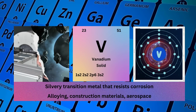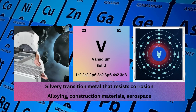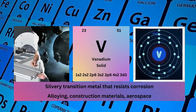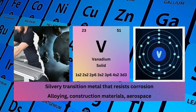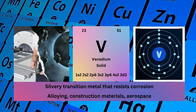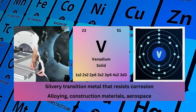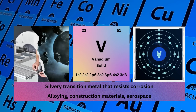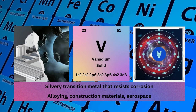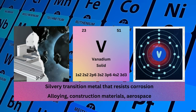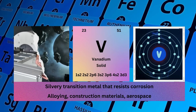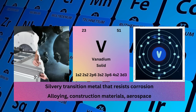Vanadium. Atomic No. 23. Mass No. 51. Symbol V. State Solid. Electronic Configuration 1S2 2S2 2P6 3S2 3P6 4S2 3D3. Physical Properties: Silvery Transition Metal that Resists Corrosion. Vanadium is used for alloying, construction materials, and aerospace.